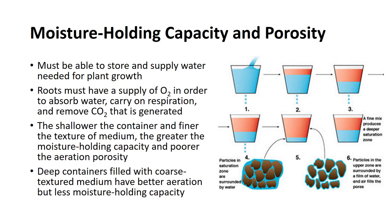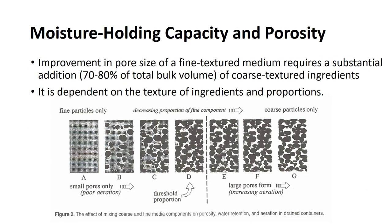This presents somewhat of a problem with containers. Because they are relatively shallow, a perched water table develops at the bottom of the container. The shallower the container and the finer the texture of the medium, the greater the moisture holding capacity and the poorer the aeration porosity. In contrast, a deep container filled with coarse-textured medium will have better aeration porosity but less moisture holding capacity. Improvement in the pore size of a fine-textured medium requires a substantial addition — 70–80% of the total bulk volume — of the coarse-textured ingredient. The components of a medium should be blended to produce a mix that has good water holding capacity and also good porosity.